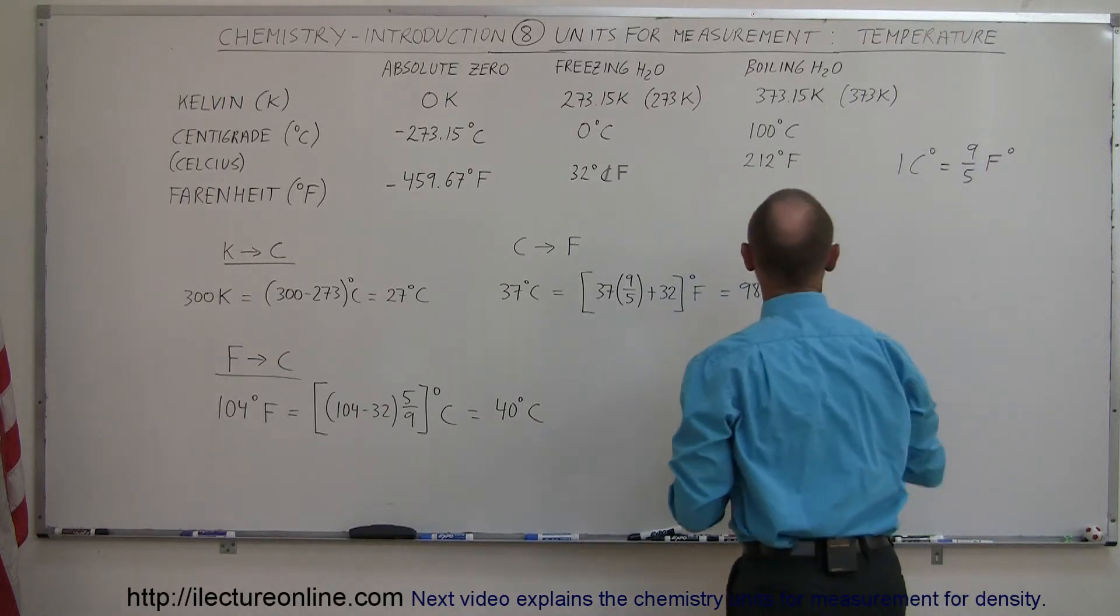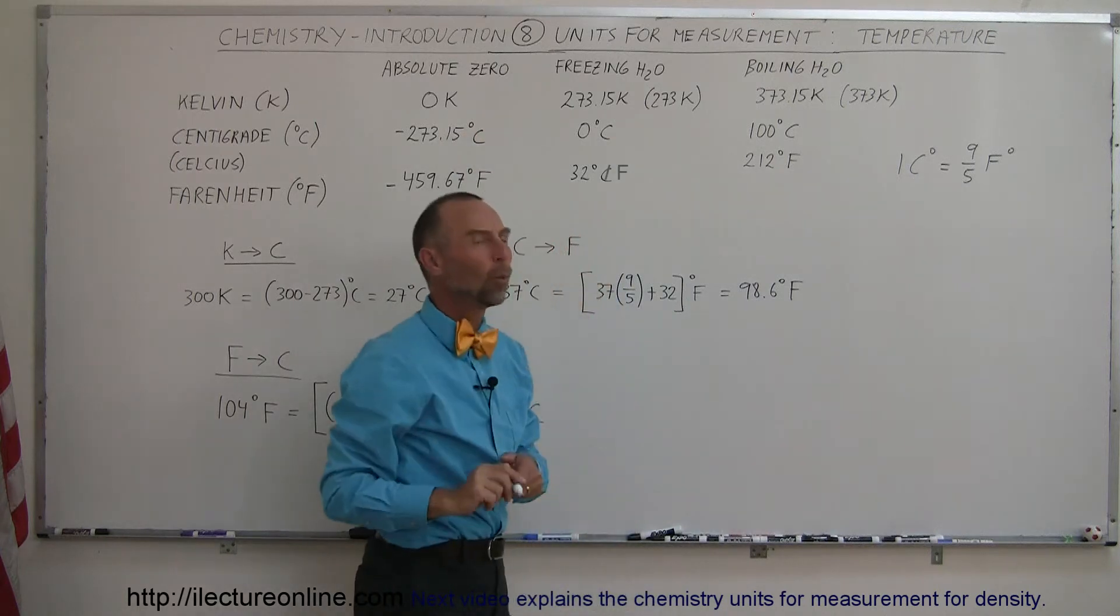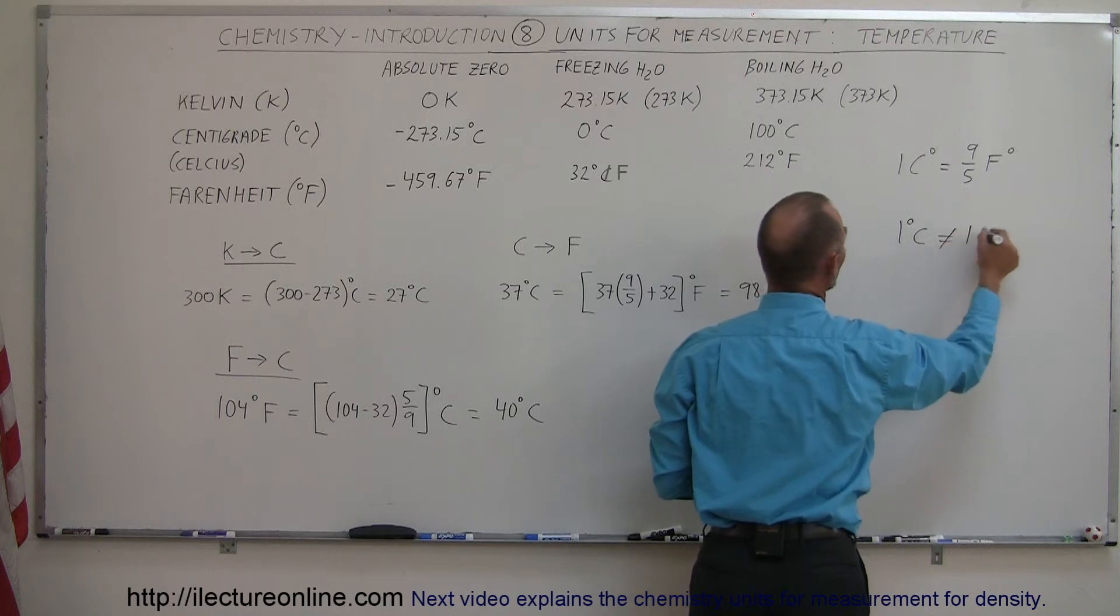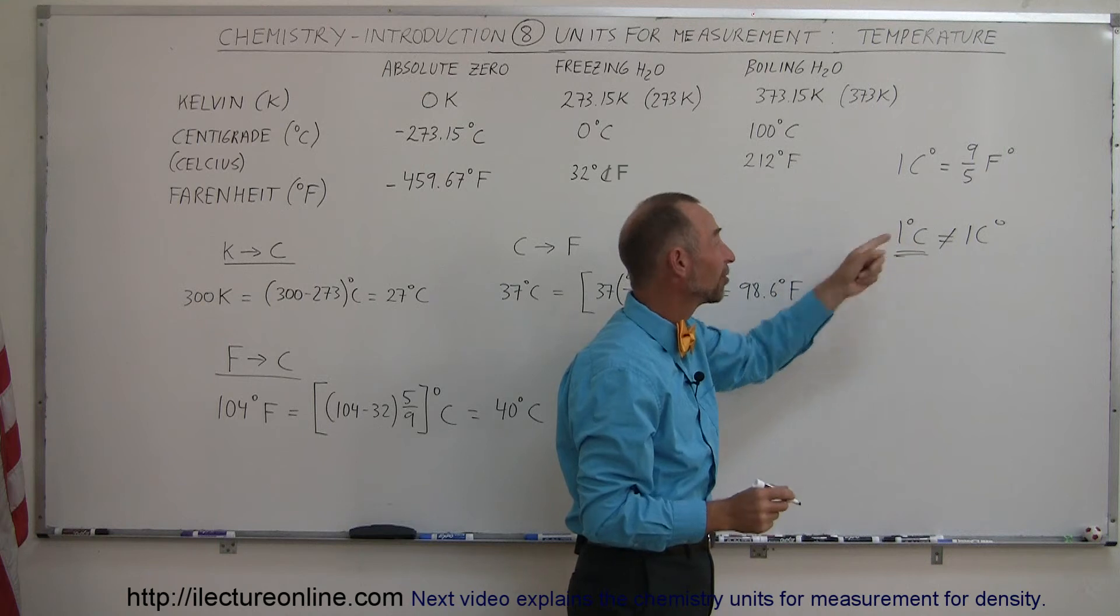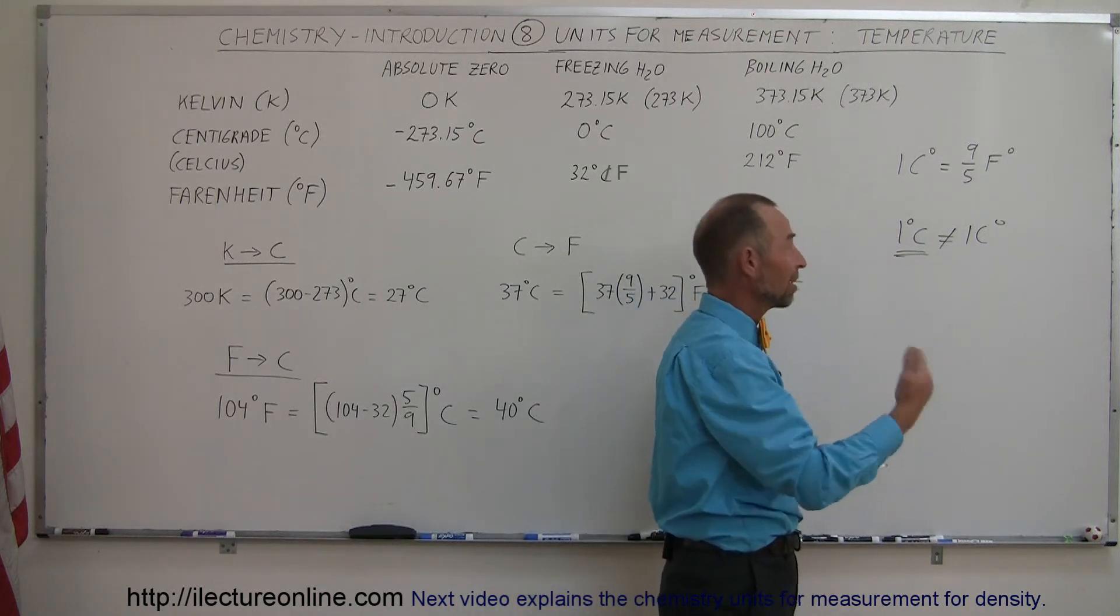Notice that there's a difference between saying centigrade degree and degree centigrade. When we write 1 degree centigrade, that is not the same as 1 centigrade degree. This means that an actual temperature measurement, it's 1 degree above 0. This simply means a delta, meaning the difference between 14 and 15.